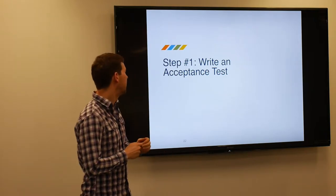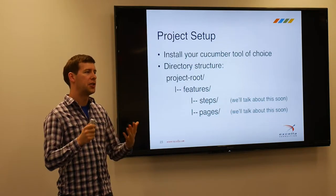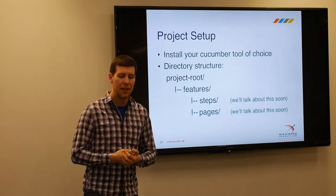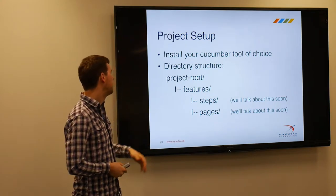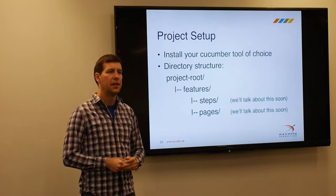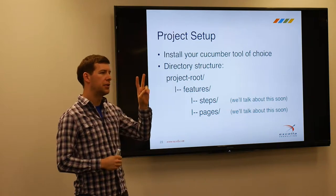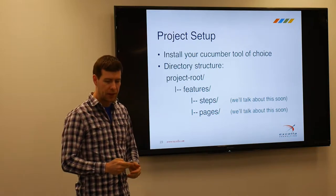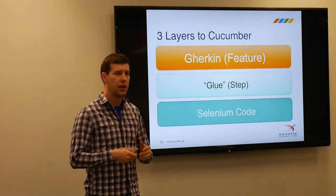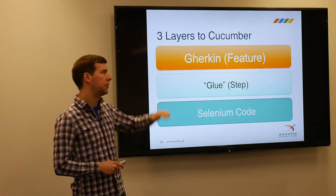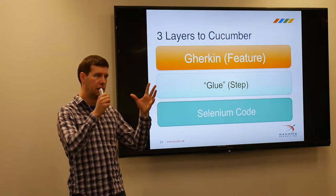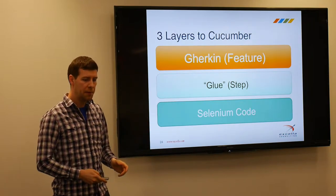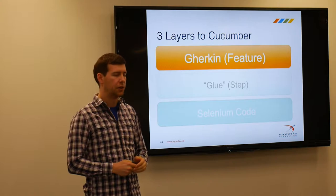Step one: write an acceptance test. We need to do a little project setup. You'll download and install Cucumber for your language of choice, then set up a basic directory structure: a project root, a features directory, and then steps and pages inside of that. We'll talk about those later. Cucumber has three layers: the Gherkin or feature layer at the top, a glue layer or step implementation in the middle, and at the very bottom, running Selenium code.